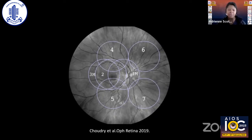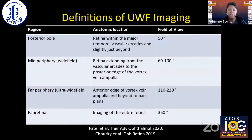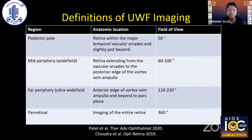Let's go back and talk about what is standard imaging. This is the seven-field imaging created by the ETDRS showing the basic posterior pole standard imaging. A task force got together to discuss definitions of ultra-wide field imaging. Posterior pole is about a 50-degree field of view. Mid-periphery is considered wide field, 60 to 100 degrees. Far periphery covers the anterior edge of the vortex vein ampulla and beyond the pars plana, about 110 to 220 degrees, and then there is panretinal field imaging.